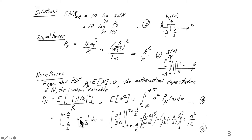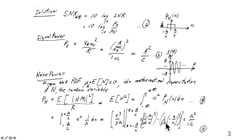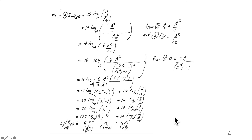Working out the integral: the integral of N² over delta gives N³ over 3 delta, evaluated between the limits delta over 2 and minus delta over 2. Evaluating those limits: 1/(3 delta) times (delta/2)³ minus 1/(3 delta) times (−delta/2)³. The negatives cancel, giving delta³ over delta — which is delta squared — and the denominator becomes 24 plus 24, but there are two terms so you get 12. Therefore, the power in the noise is delta² divided by 12, where delta is the width of the quantization interval.